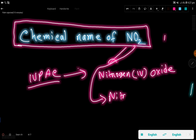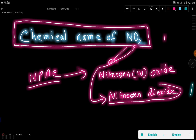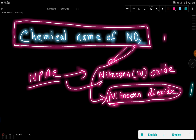In the classical system, this compound is called nitrogen dioxide. So nitrogen dioxide is the classical name, while in the IUPAC or stock system, the name of NO2 is nitrogen(IV) oxide. I hope you now have an idea of how to name NO2. Thank you for watching this video.